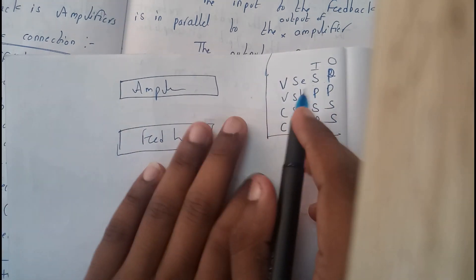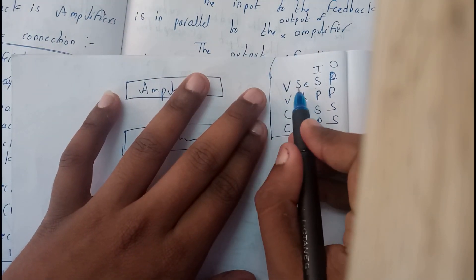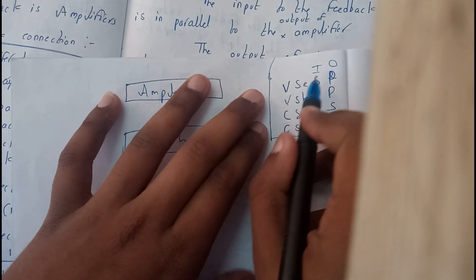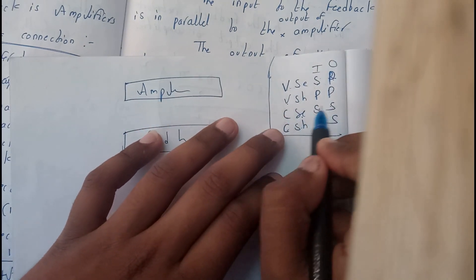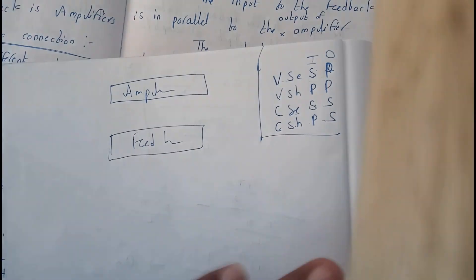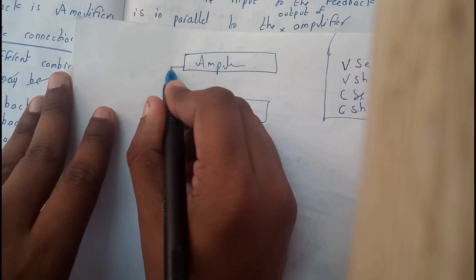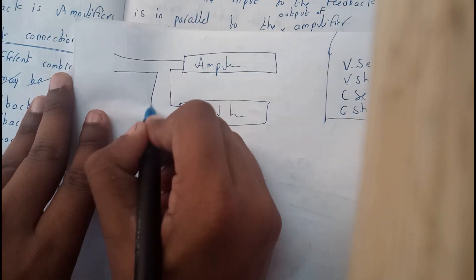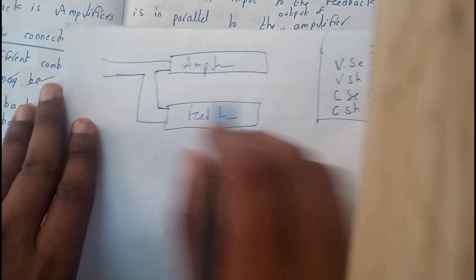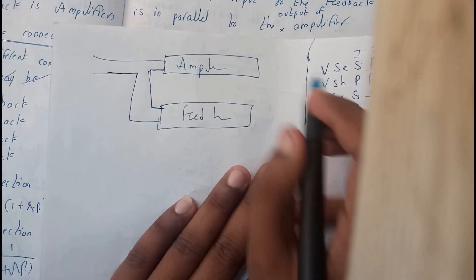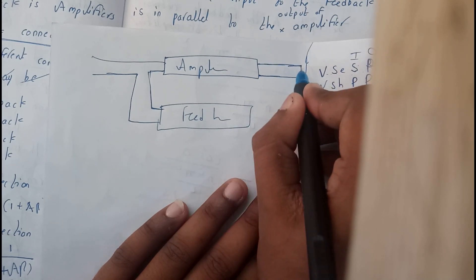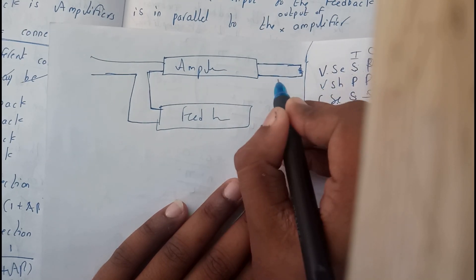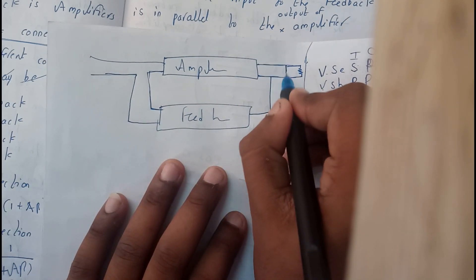The series connection looks like a direct line connection at input or output. The parallel connection will have a bubble — it skips the wire. For voltage series (SP), the input side is series and the output side is parallel. This is the diagram of voltage series. Voltage shunt (PP) means both input and output connections are parallel.